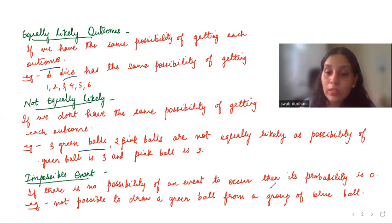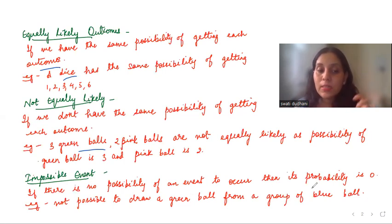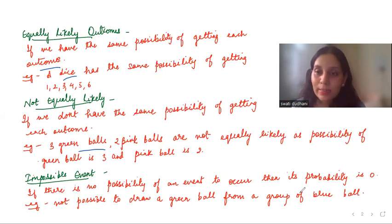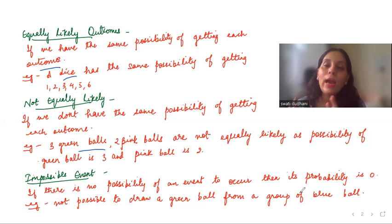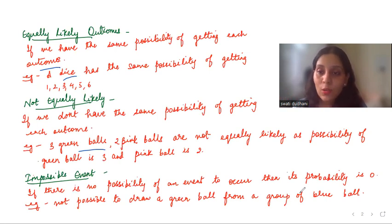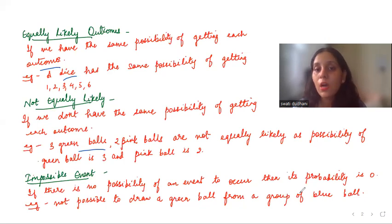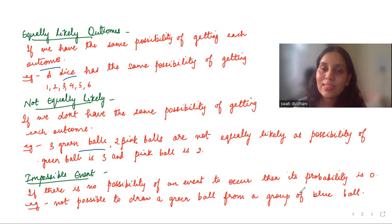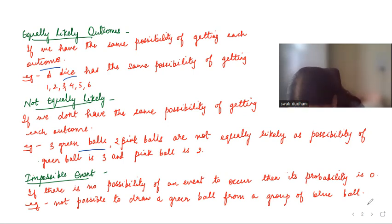Next is the impossible event. If there is no possibility of an event occurring at all, then the probability is zero. For example, if you have a bag full of blue balls and you want to draw a green ball — since there is no green ball at all, the possibility of taking a green ball is zero. It is impossible to get it.